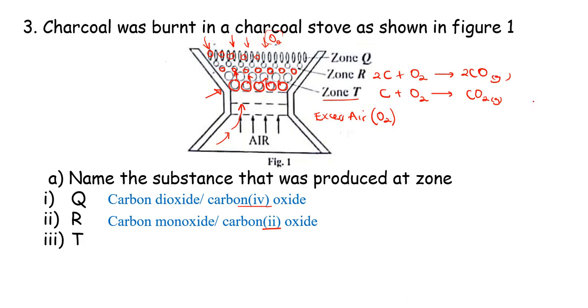At that point we shall also undergo the same reaction as in zone T. So the substance being formed will be carbon dioxide, because our charcoal at the top here will be reacting with the air present and will have enough oxygen to undergo complete combustion to form carbon dioxide. These are the substances for Q, R and T.